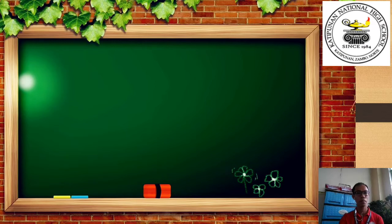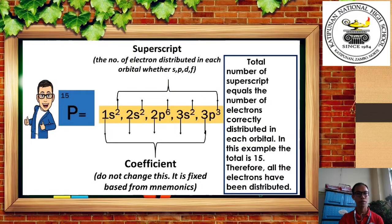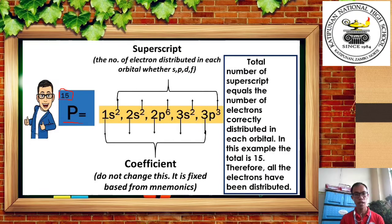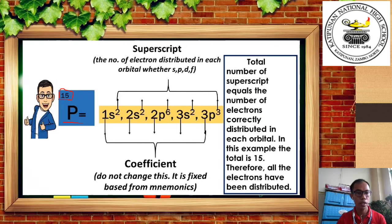It is also important to remember this. Phosphorus, for example, has an atomic number of 15, so there are 15 electrons to distribute in the energy level. If you write the electronic configuration of phosphorus, you will come up with 1s2, 2s2, 2p6, 3s2, and 3p3, following the electron distribution mnemonics.